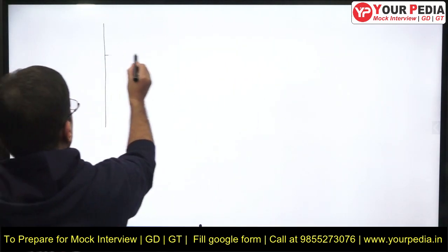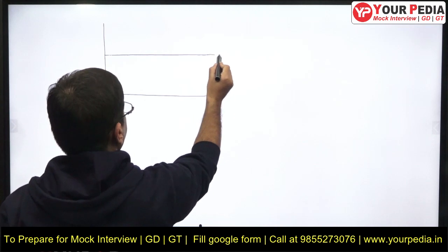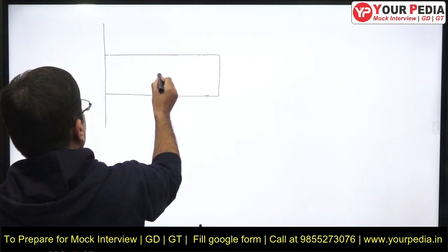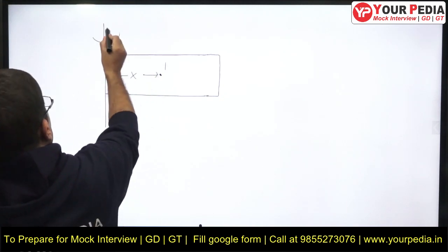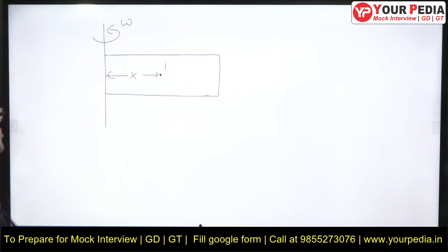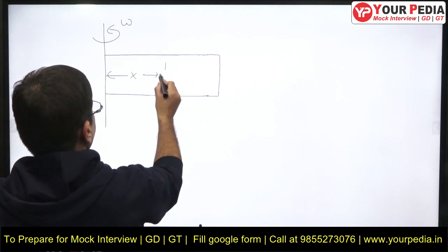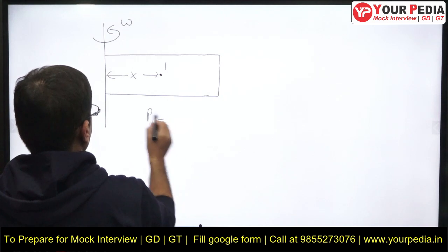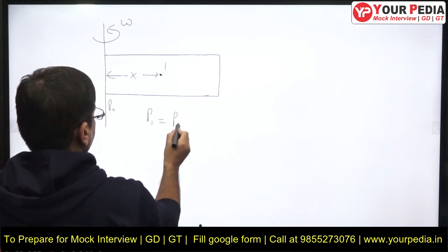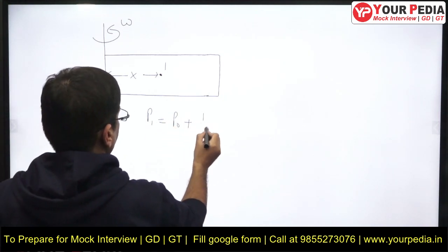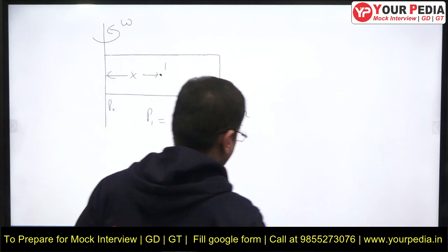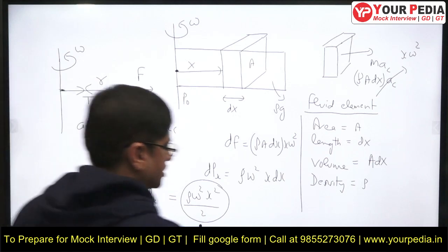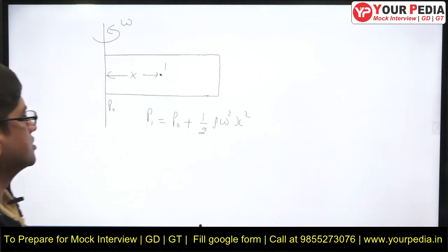I give you a tube in which there is a liquid of specific weight rho, and I give you point 1 which is at distance X from the axis of rotation. The tube is rotating with angular velocity omega. So what is the pressure now? Pressure at point 1 is whatever pressure is at the center plus half of rho omega squared X squared. This is what we got. This is the pressure acting at this point.